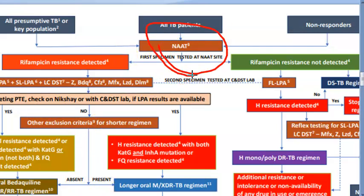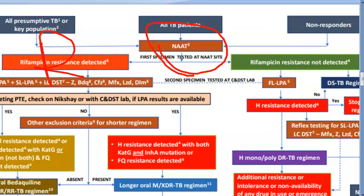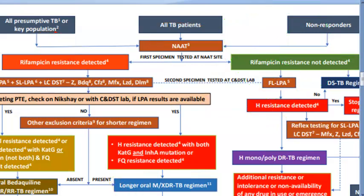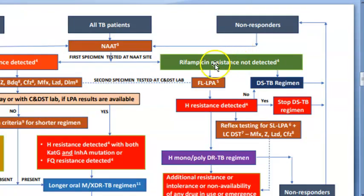NAAT checks for rifampicin resistance. If rifampicin resistance is detected, you go to one side of the algorithm; if it is rifampicin-sensitive, you go to the other side. If it is rifampicin-sensitive, you start drug-sensitive tuberculosis treatment. So if there is no rifampicin resistance, you give the drug-sensitive tuberculosis regimen.